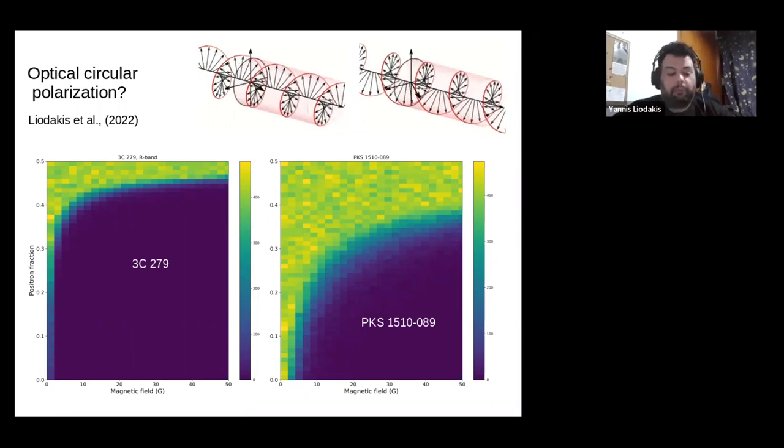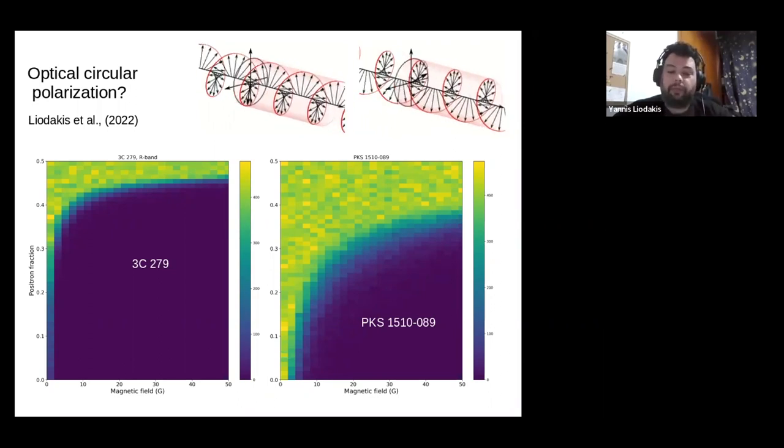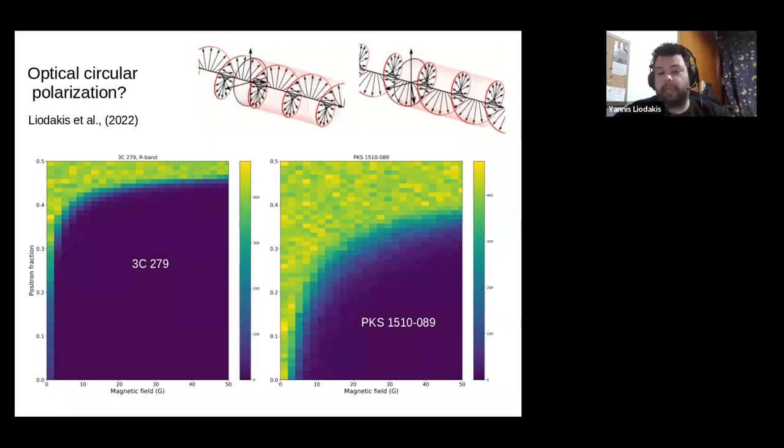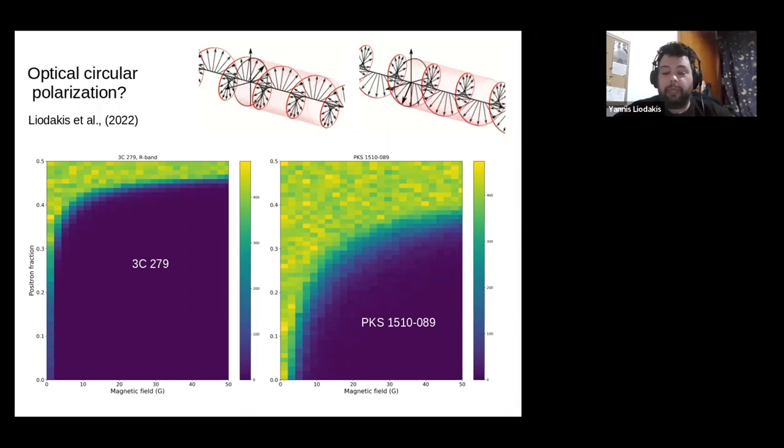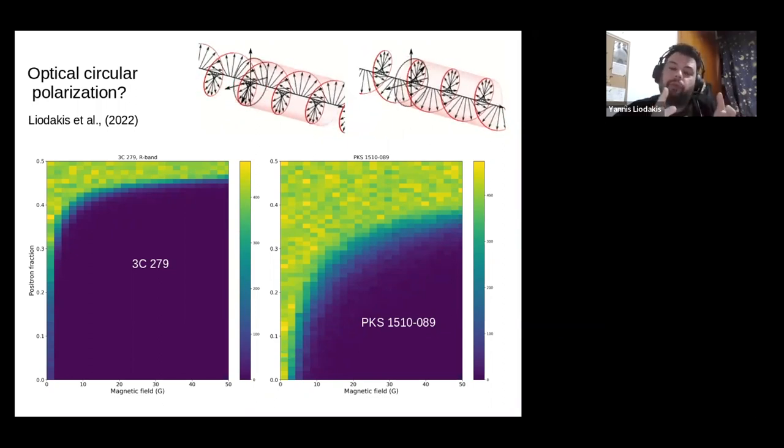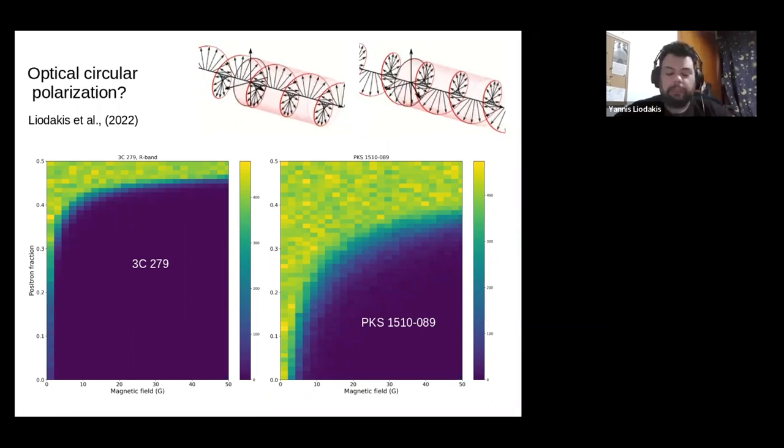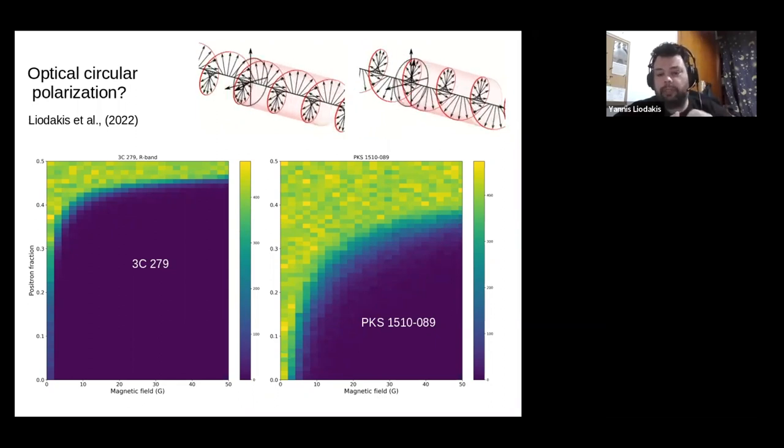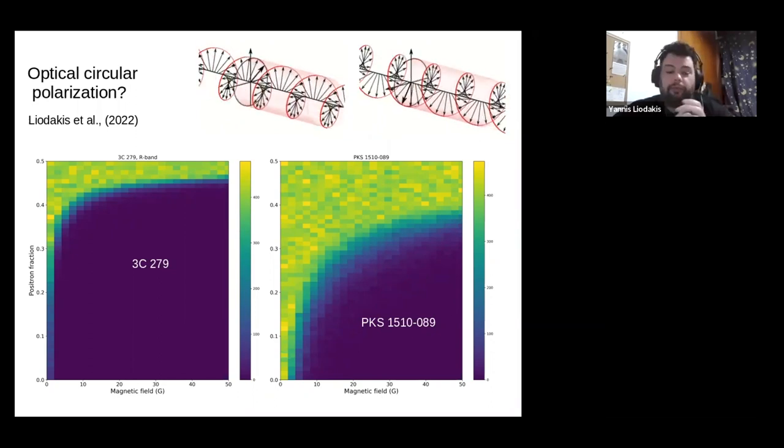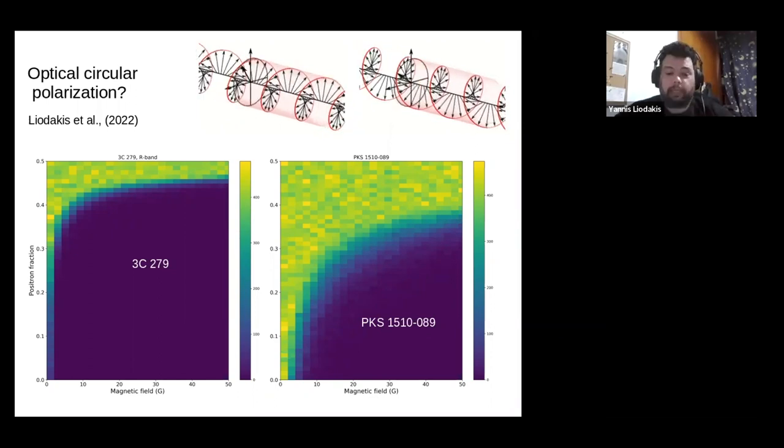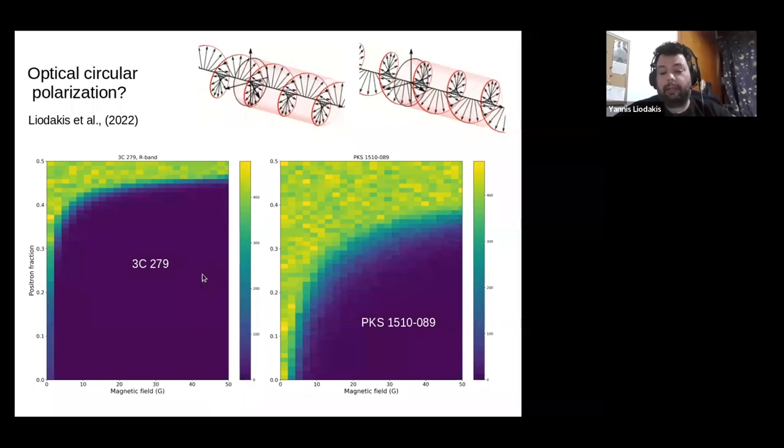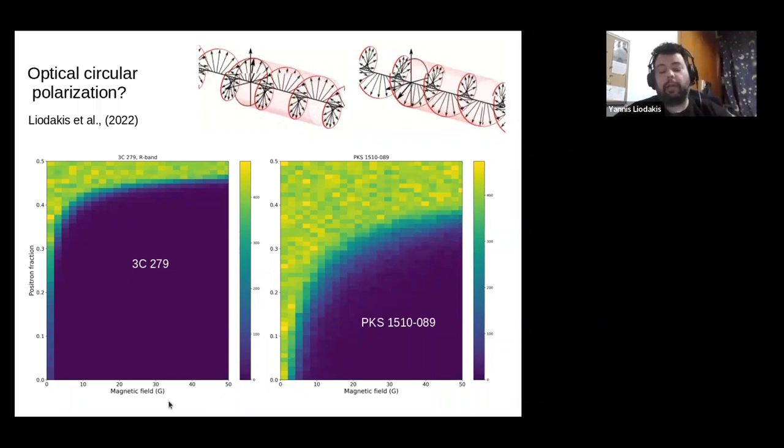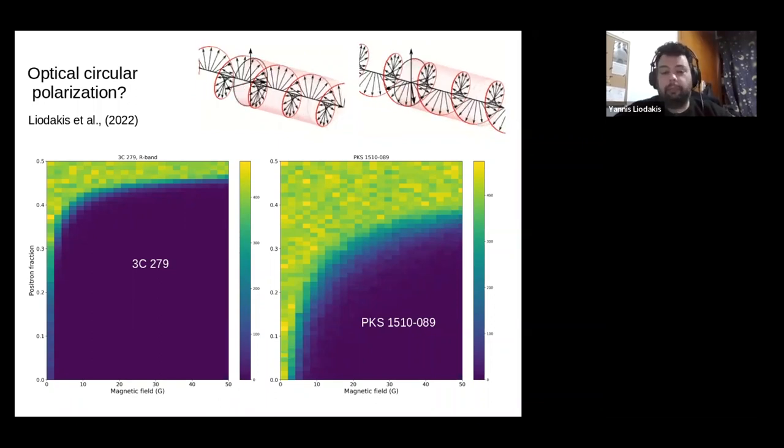So we were able very recently to observe two sources. These are famous blazars with the 1.9 meter telescope at the South African Astronomical Observatory. And we didn't get a detection, but we were able to place a pretty good upper limit of about 1%, which really allows us to constrain the parameter space, both in terms of the magnetic field that you have in your emission region, but also the positron fraction. So this is basically the fraction of positrons to electrons, and everything else is protons to preserve your charge neutrality. And this is basically the results you see here. And for proton models to be very efficient, you need high values of the magnetic field, and you need low levels of the positron fraction. So you have a lot of protons, high magnetic field, and all that region, as you can see, is excluded by the observations.